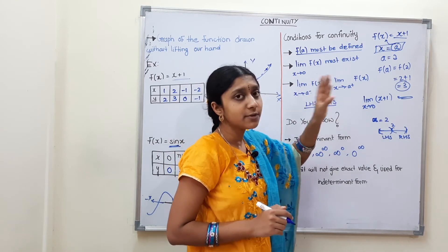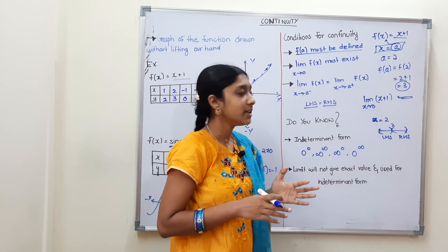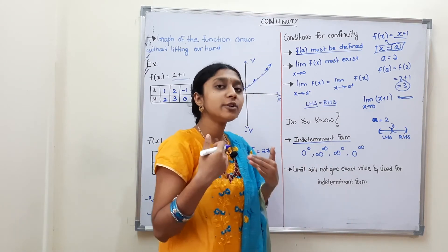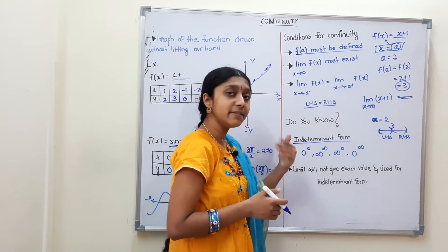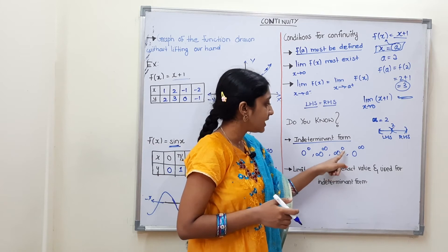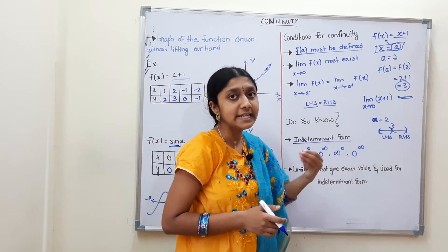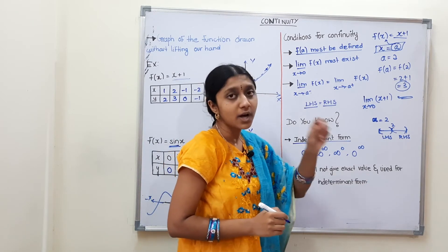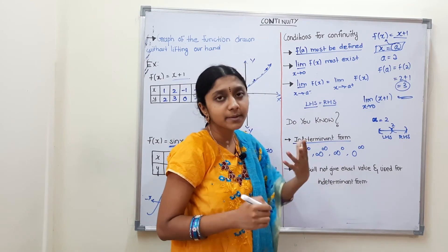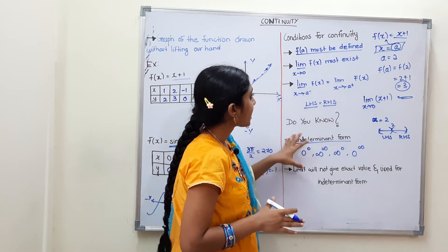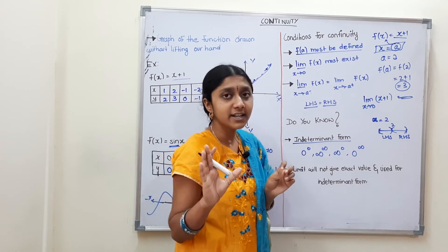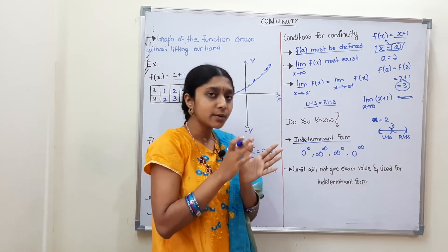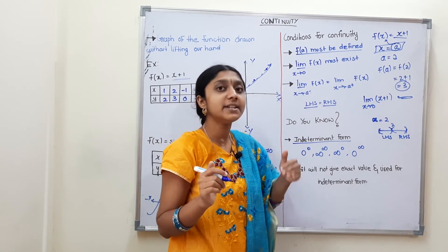So the main condition for continuity is: LHL = RHL = f(a). If we can prove this, the function is continuous; if not, it is discontinuous. Now two important points: indeterminate forms. Indeterminate forms are expressions with no fixed value — for example, 0⁰, ∞/∞, ∞⁰, or 0·∞. In such cases, we use limits to find the accurate value, since limits handle indeterminate forms.